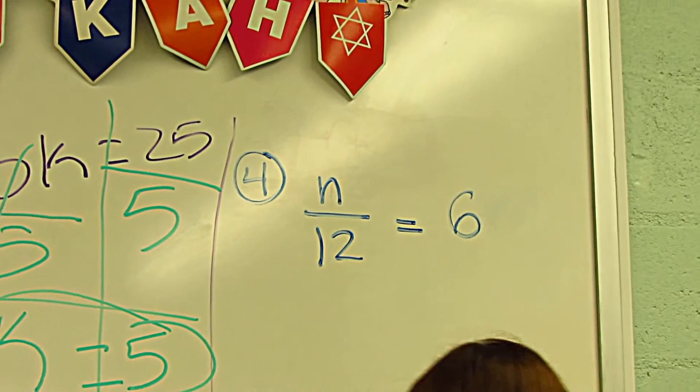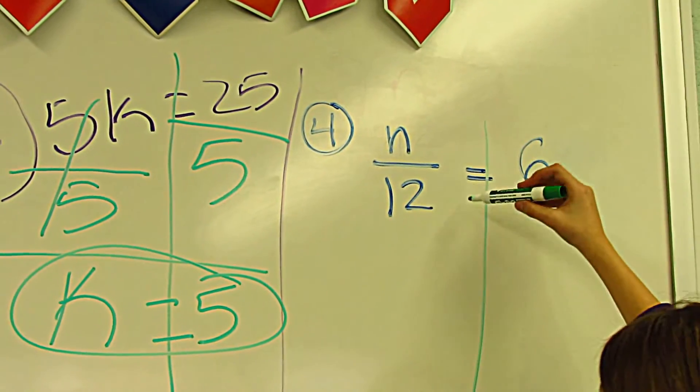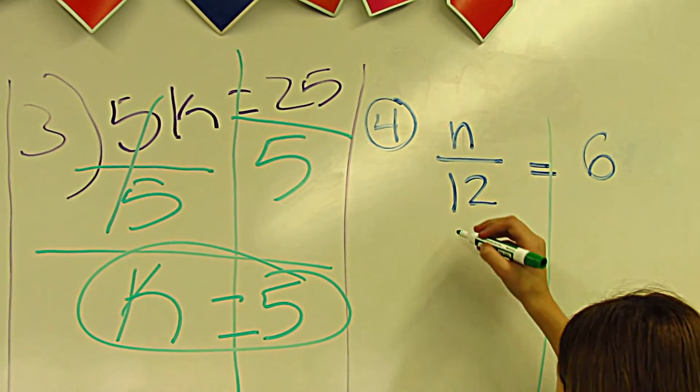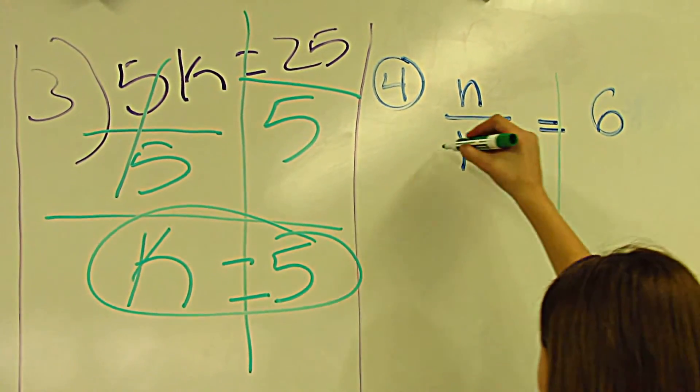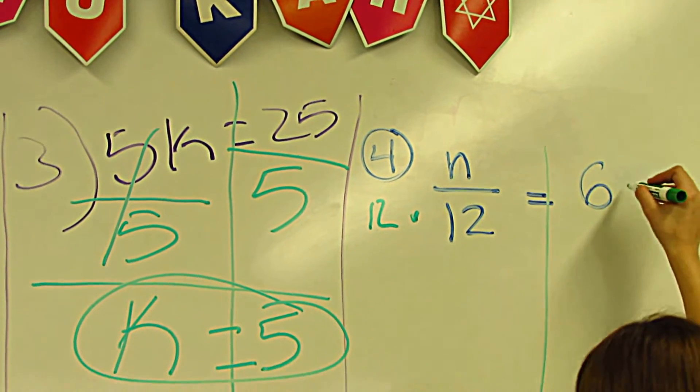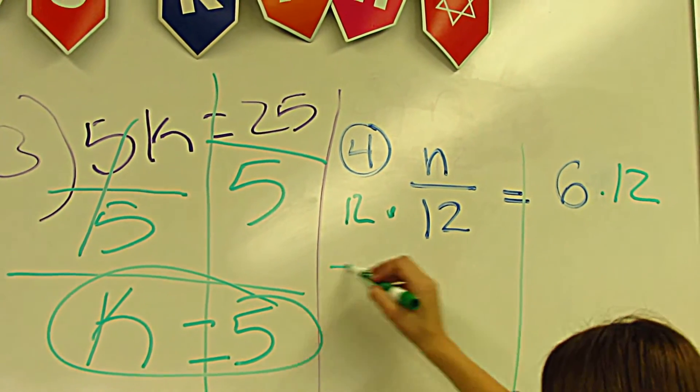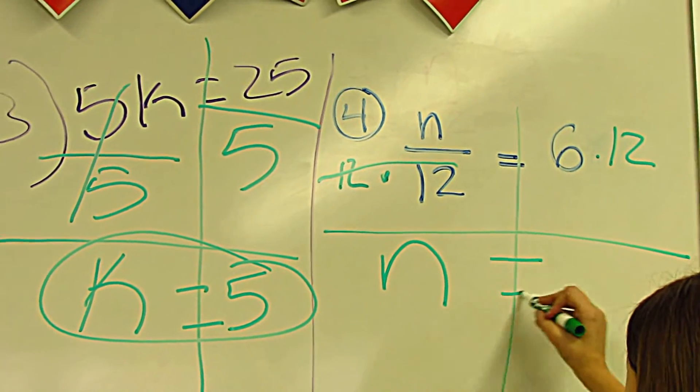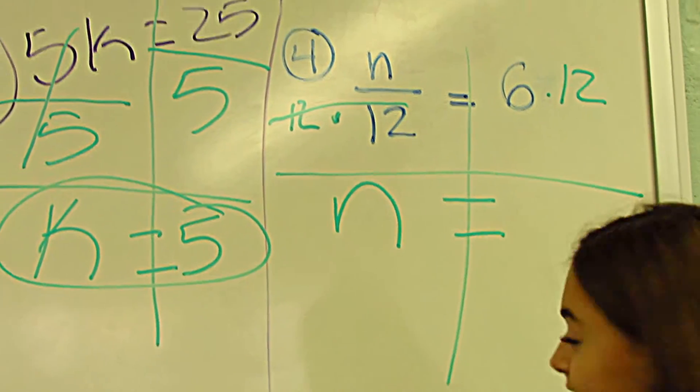Next one. N divided by twelve is equal to six. You're going to multiply twelve on each side. This cancels out, so you're going to drop down your N. N is equal to sixty.